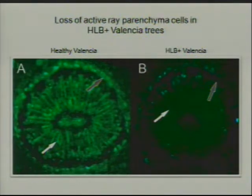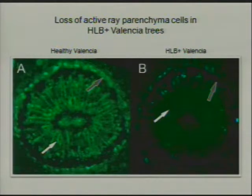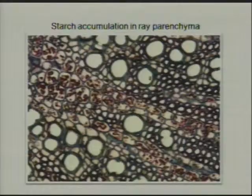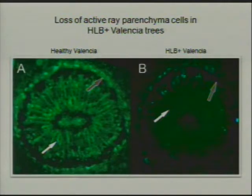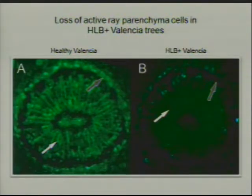On the left we have a healthy Valencia petiole and on the right an HLB-infected petiole. We stained it with FDA, which shows where the living cells are — anywhere there's a bright green spot, there's a living cell. In the healthy tissue, the white arrows indicate parenchyma tissue gorged with starch granules, and all those cells are active and living. These bright green spots are active and living in the ray parenchyma.